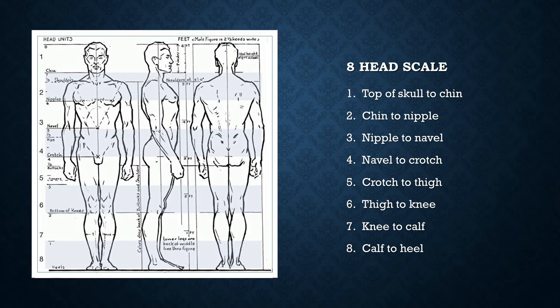Areas where the body pivots — including the neck, shoulders, elbow, wrists, waist, pelvis, knee, and ankle — will be articulated as spheres.